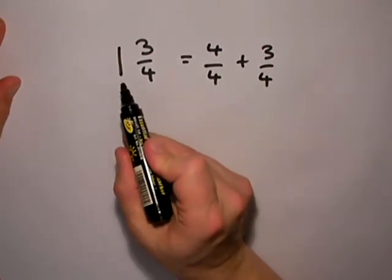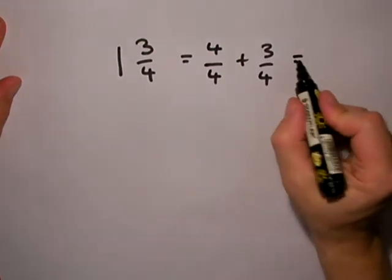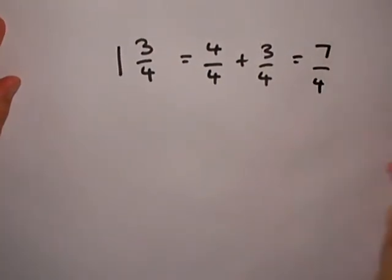So that's the 4 quarters there, and that's the 3 quarters I've got already. Between them, those two added together would make 7 quarters.